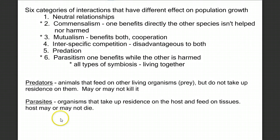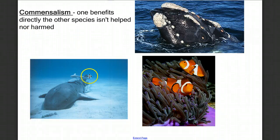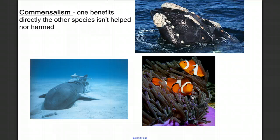Let's move on to types of interactions. There are six categories of interactions with different effects on population growth. Neutral relationships have no effect by definition. Then there are commensalistic relationships, where one organism benefits directly and the other species is neither helped nor harmed. For example, barnacles on a whale benefit, while the whale is not harmed nor helped. Small fish following sharks gain benefit from the shark's feeding without providing any benefit to the shark. And clownfish shelter among sea anemone tentacles — immune to the stings — gaining protection while the anemone receives no benefit but is also not harmed.